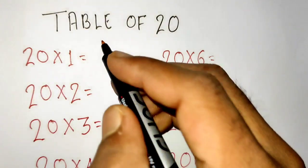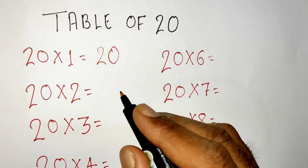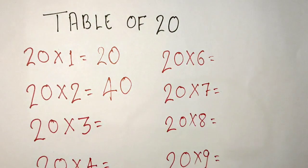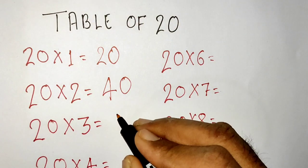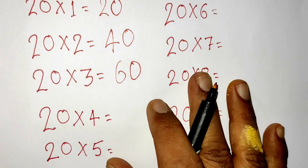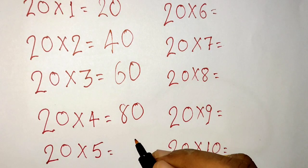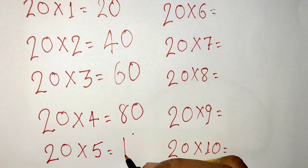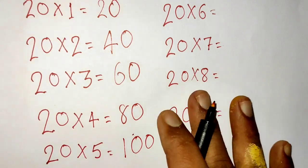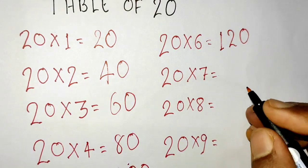20x1=20, 20x2=40, 20x3=60, 20x4=80, 20x5=100, 20x6=120.